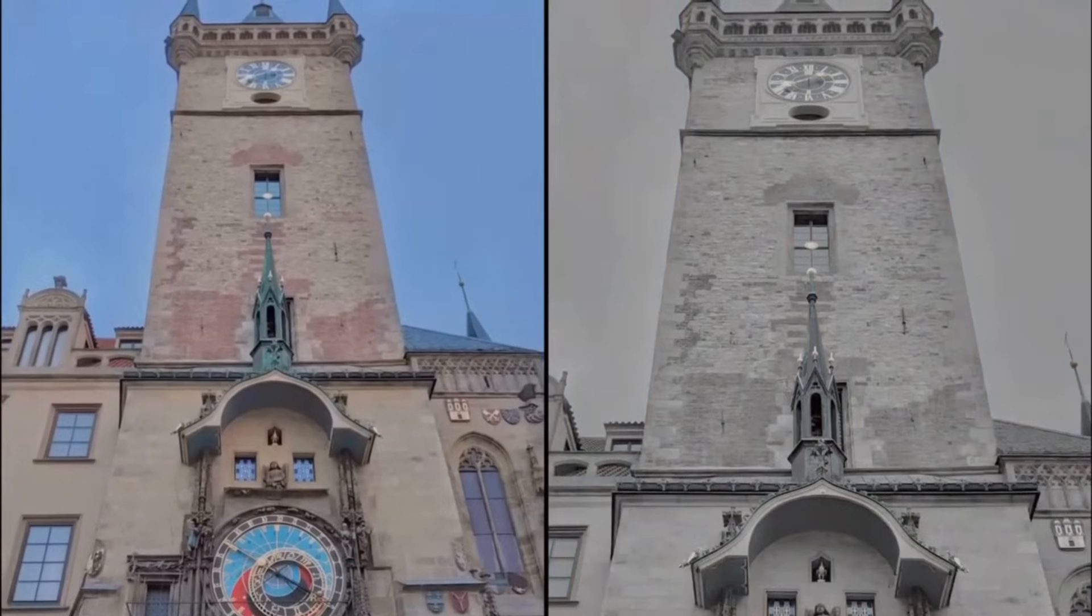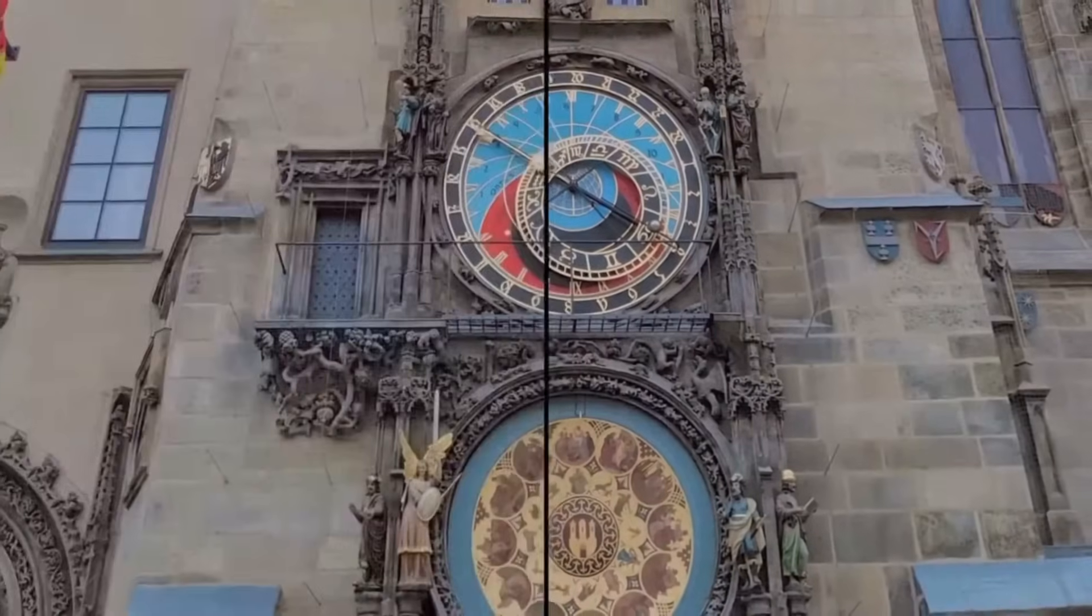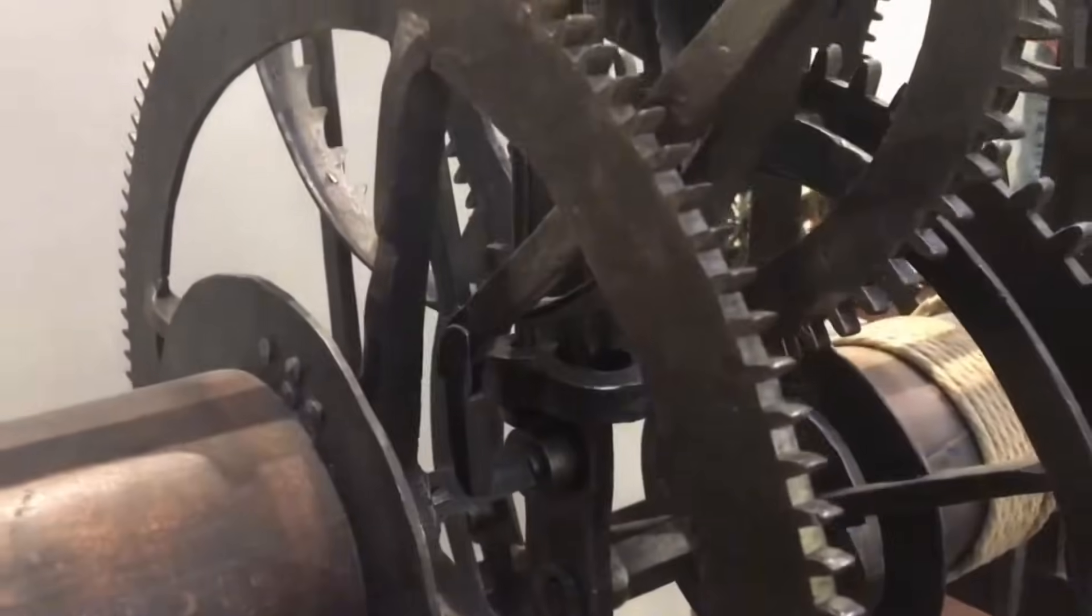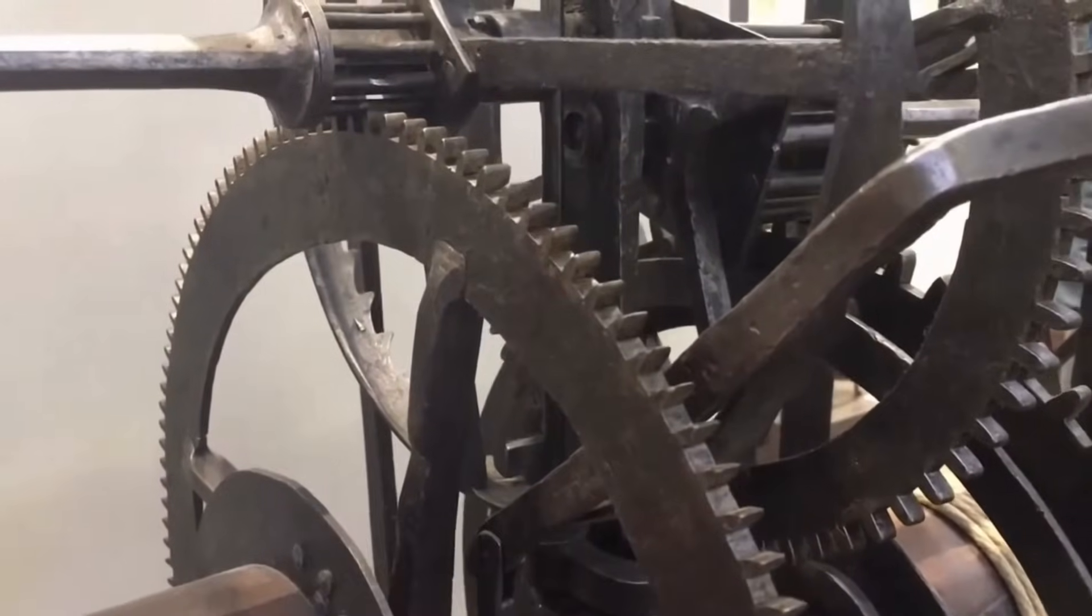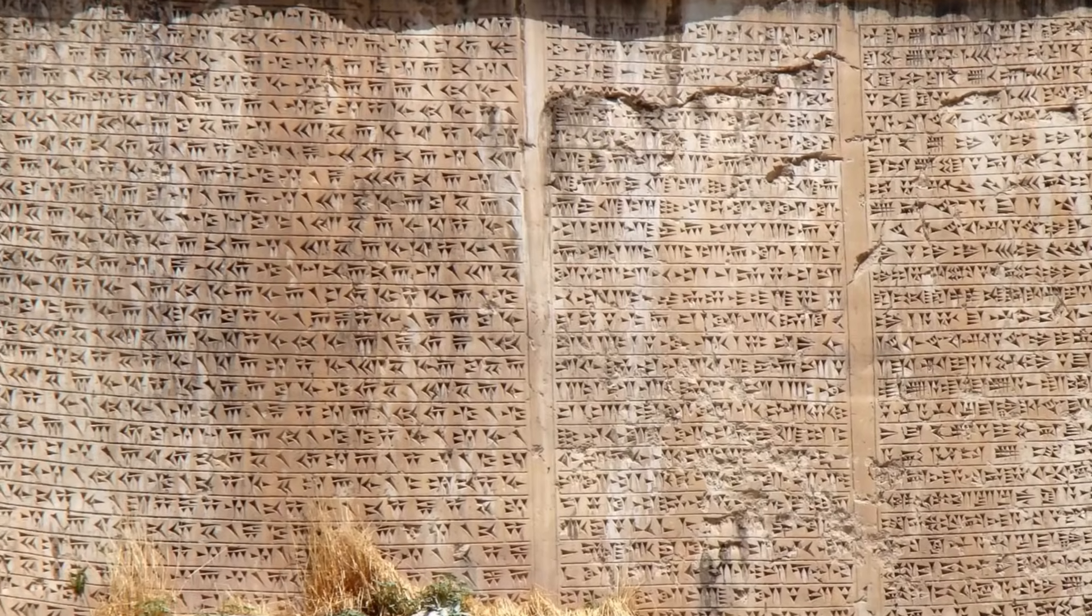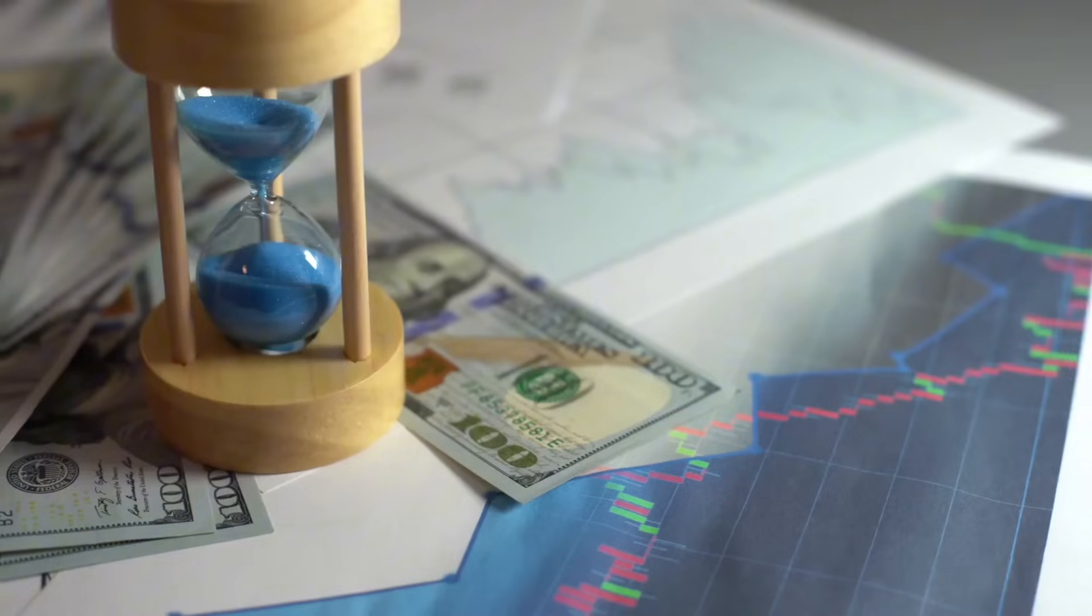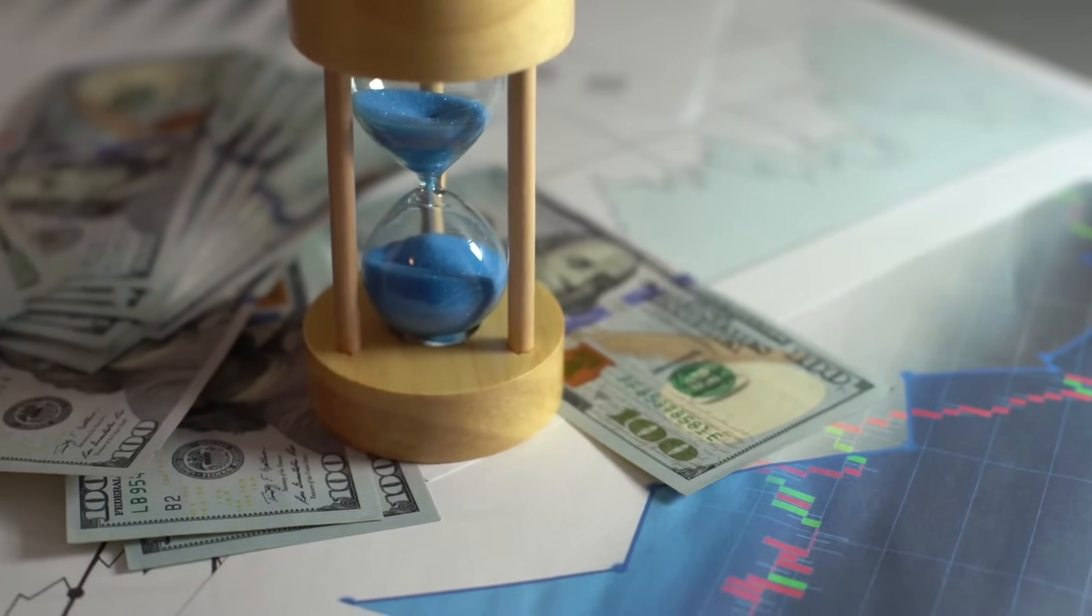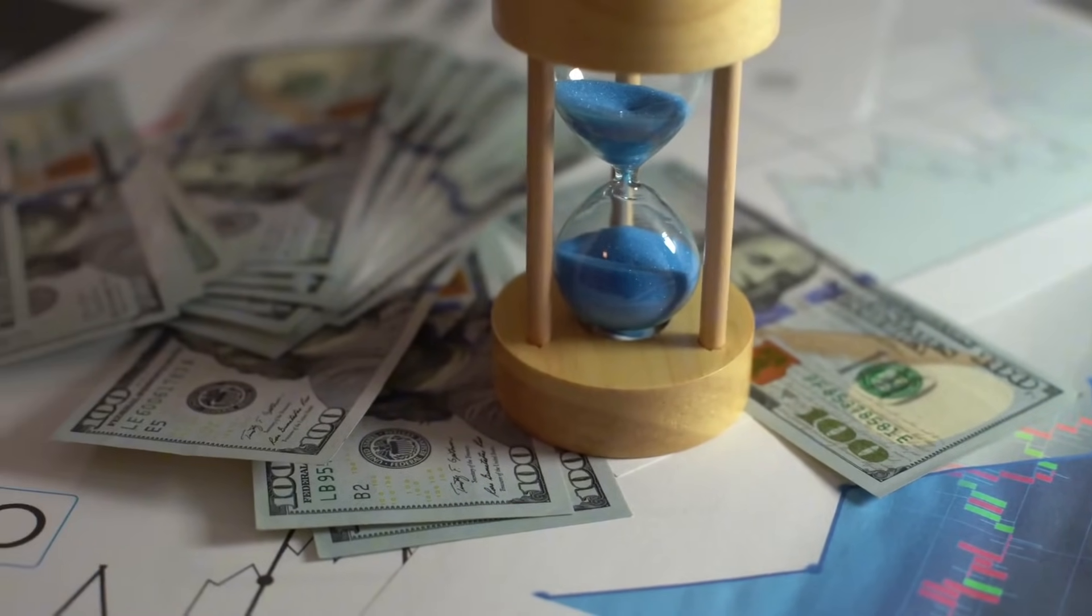When European clockmakers built the first public clocks in the 14th century, they used 60-tooth gears, translating ancient calculation into daily time. No single document names a sole inventor of the 60-second minute. Records show cultural layering, not one decision. Attempts to replace 60, like French decimal time, quickly failed.